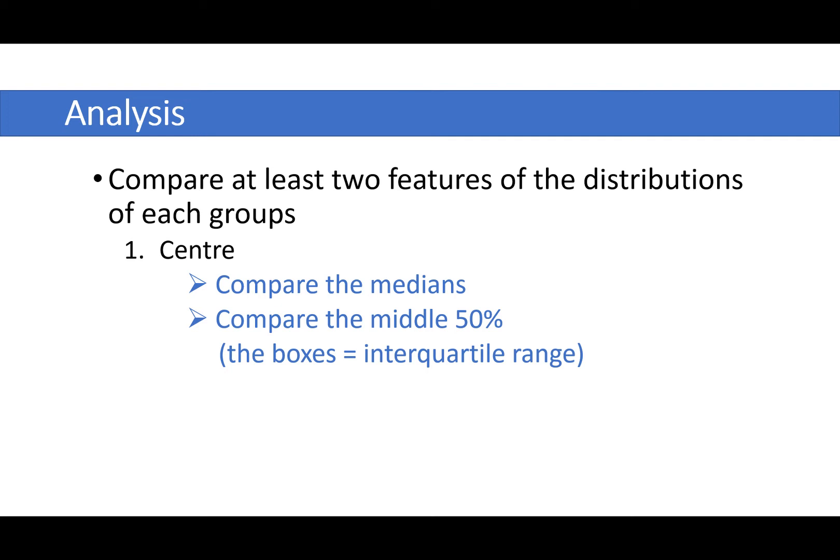You can also compare the middle 50 percent. That means the box. So the boxes represent the middle 50 percent of your data from the 25 percent mark up to the 75 percent mark. How do they compare between your groups? Is one box higher up the scale than another?